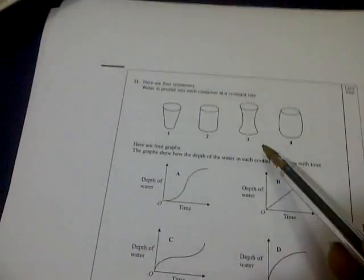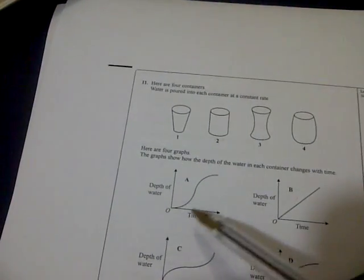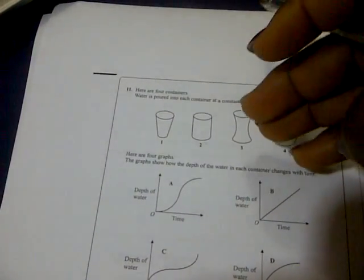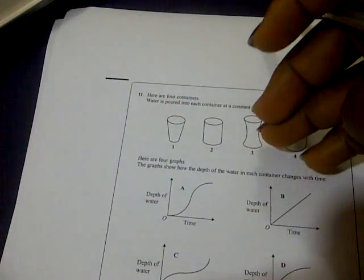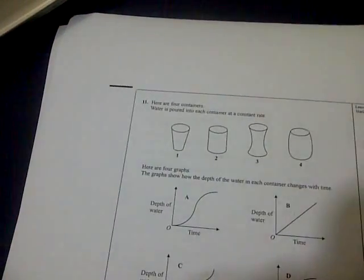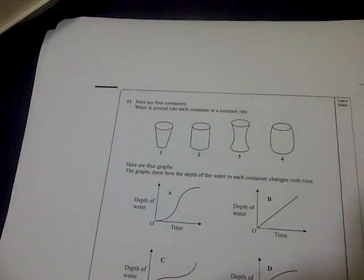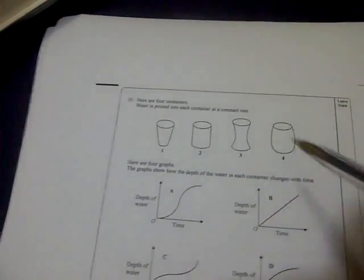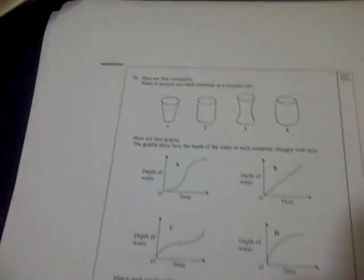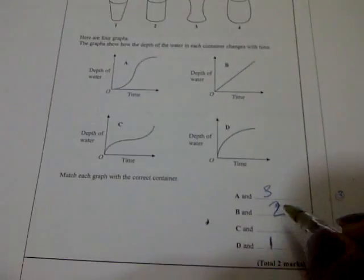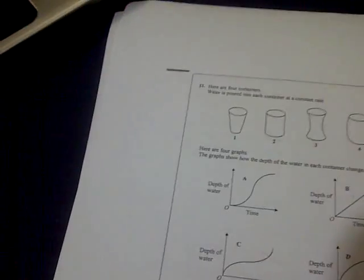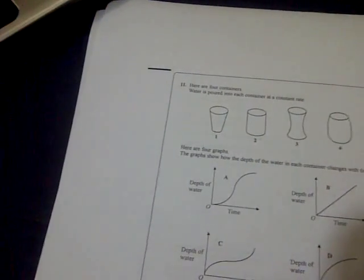For this one, now if you notice when you're pouring water, it's wide first of all, then it goes in, then it begins to rise. It has a funny shape because of this funny shape, and the one that is most likely to have it is A. So we have three, or A and three.